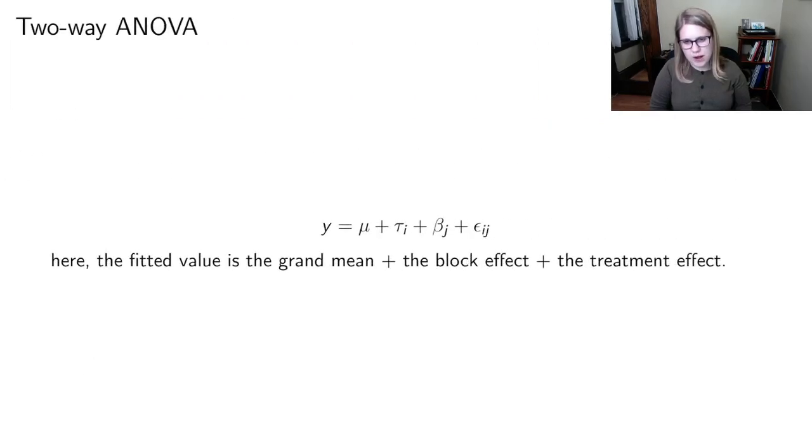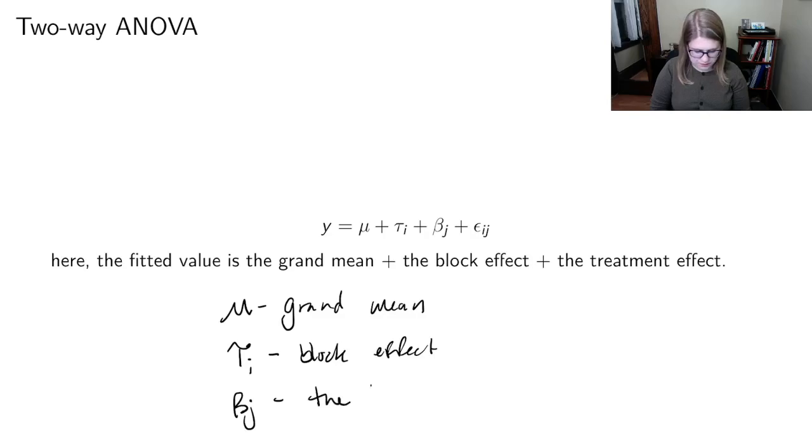And when we do two way ANOVA, we have more notation. So now we've got our mu, which is the grand mean. But then we've also got tau sub i, which is the block effect. And we've got beta sub j, which is the treatment effect. And essentially, the block and the treatment, those are just two of our variables from our two way ANOVA.